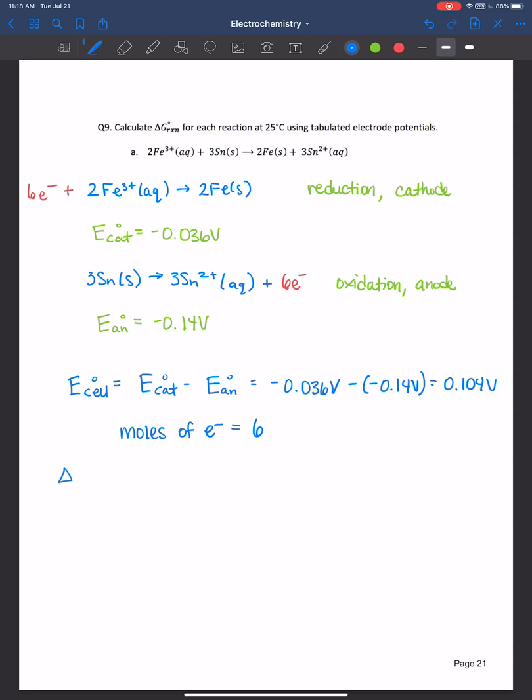We just learned the formula, the relationship between Gibbs free energy and the cell potential. So that's negative six moles of electrons times Faraday's constant, which is 96,485 coulombs per mole of electrons, and moles of electrons cancel out, times 0.104. And if we wanted units to cancel out, remember that one volt is equal to one joule per coulomb.